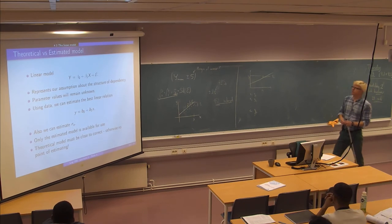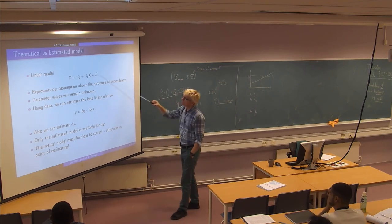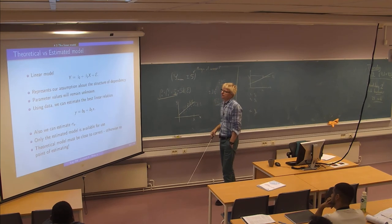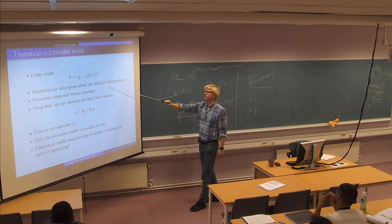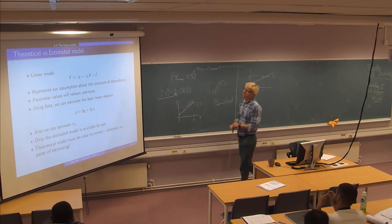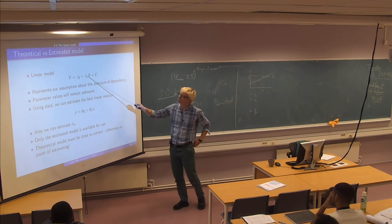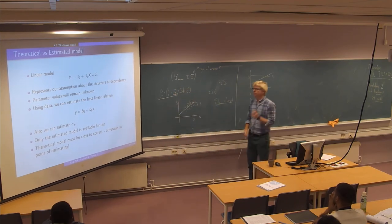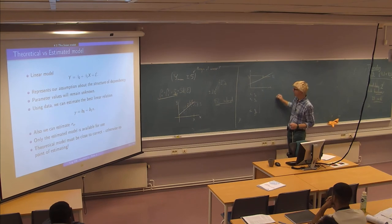So it's OK here to make a distinction, a clear distinction between what we call the theoretical model and the estimated model. So this is the theoretical model, it has some parameters and it's just a representation of our assumption that these two are depending linearly on each other. So it's about the structure of dependency if you want to use some fancy words. But you need to realize that the parameter values in the true model here, they will always remain unknown.